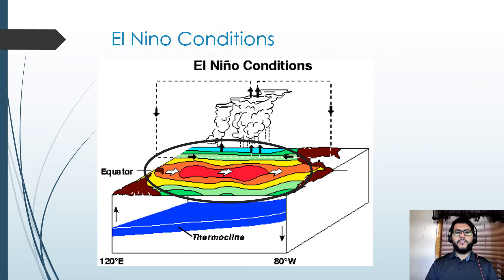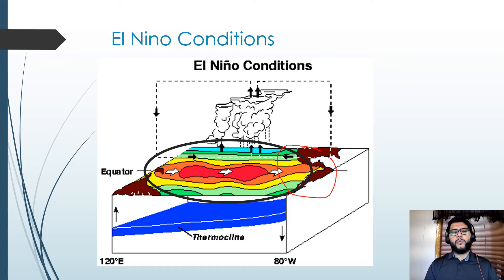During an El Niño condition, the trade winds shift and cause that warm spot to move closer to North and South America. That warm spot causes downwelling instead, so instead of cold oxygen-rich water we get warm water with low oxygen — fishing gets pretty bad. The storm systems shift to bring more rain for North and South America, and mudslides become common in Peru.